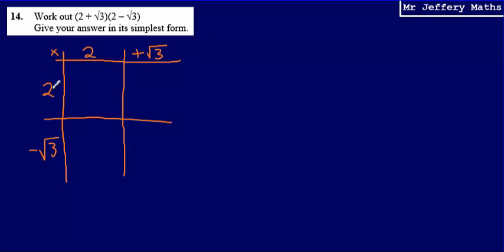Then working this out: 2 multiplied by 2 will give me 4, and 2 multiplied by positive root 3 will give me positive 2√3.